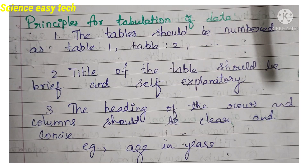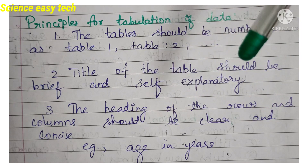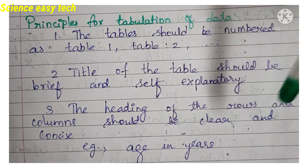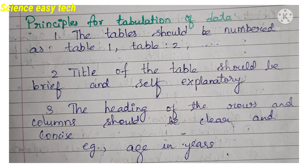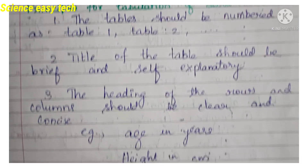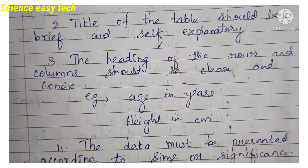The heading of rows and columns should be clear and concise. Whenever we talk about a table, you will have rows represented horizontally and columns represented vertically. For example: age in years, height in centimeters, weight in kilograms — like that it goes on.